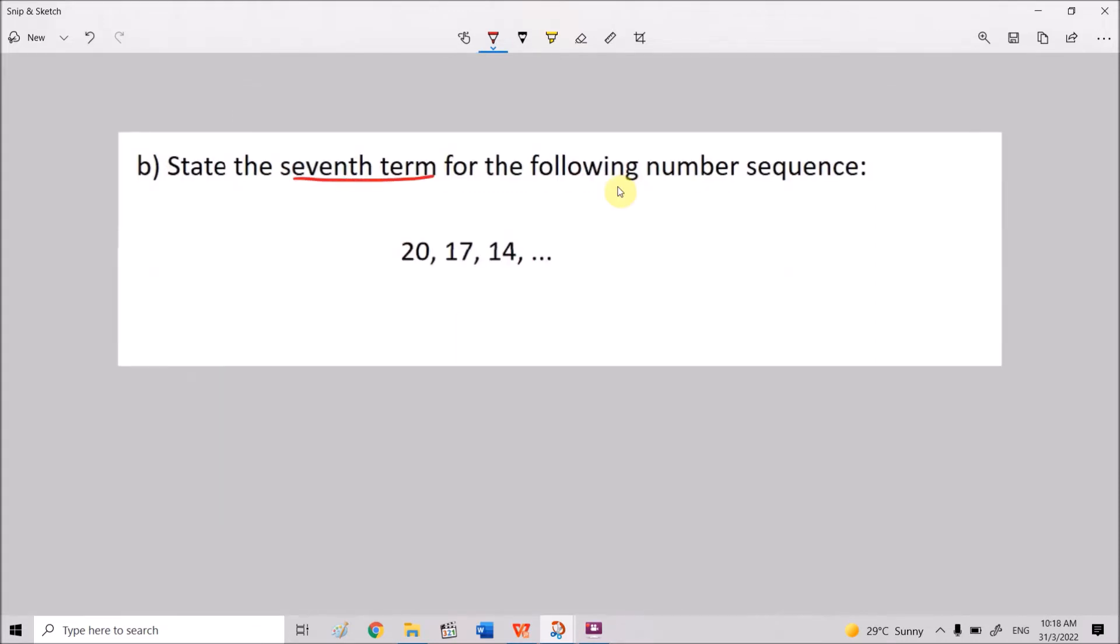In the next example, we are looking for the seventh term. In other words, we are looking for T7 for the following number sequence. First, we determine the pattern. From 20 to 17, we subtract by 3. From 17 to 14, we subtract by 3. Hence subtracting 3 is the pattern here. It's confirmed so we can continue. 14 minus 3 is 11, 11 minus 3 is 8, 8 minus 3 is 5, 5 minus 3 is 2. We are looking for the seventh term. So the first term here is T1, which is 20. The second term is T2. We always start from the left to the right. The third term is 14, the fourth term, fifth term, sixth term, and seventh term. Hence the answer, T7 is equals to 2.